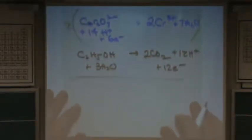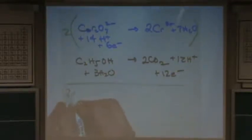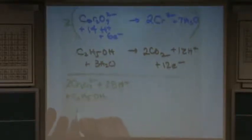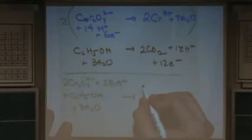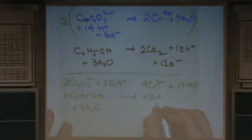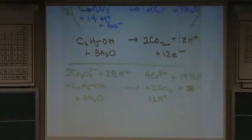So that all the electrons are going to cancel. So now I have two dichromics 2 minus. So I'm going to do all the reactants first. Plus 28 H plus. Plus C2H5OH. This is ethanol. Plus three waters. I think I got everything on the reactant side. Now, all the products. Four Cr3+, plus 14 waters, plus two CO2s, plus 12 H plus. And I think that's all the products there.